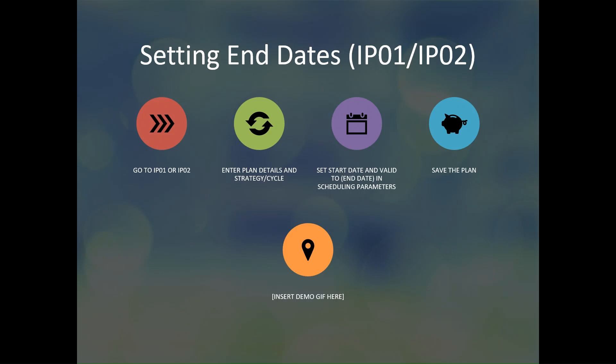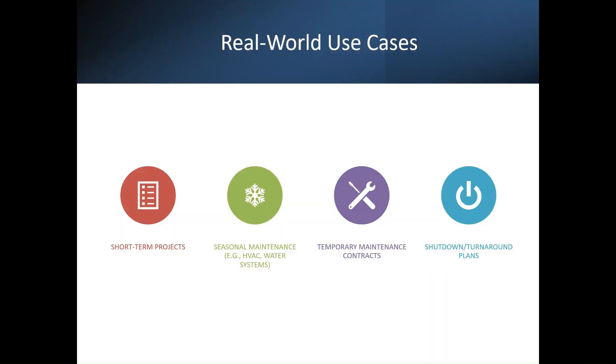To set end dates, run transaction ip01 or ip02, then enter the plan details — its strategy or cycle. Set the start date and the validity period; the end date will be automatically calculated, or you can enter it manually. This is done in the scheduling parameters. Save the plan after entering the required fields such as start date and date validity.